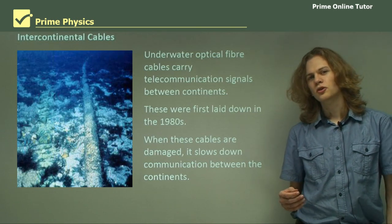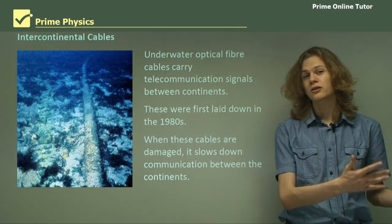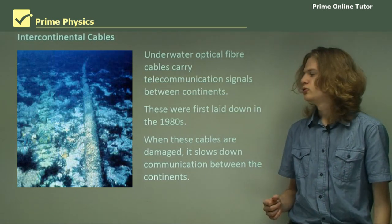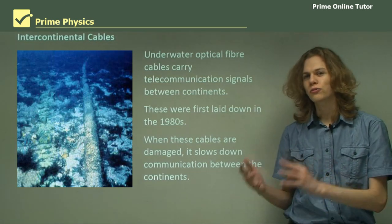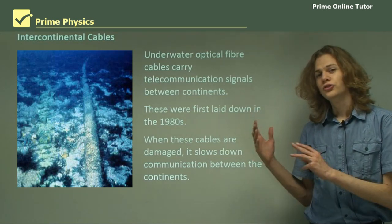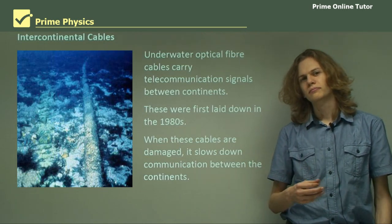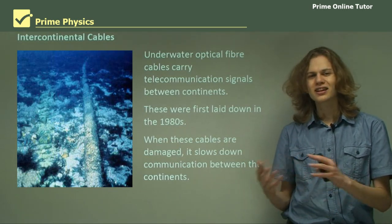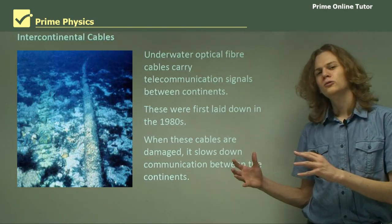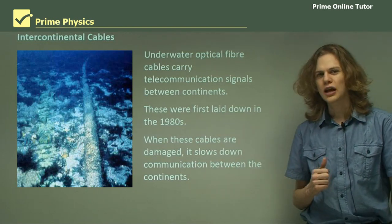This means that it's possible to get internet moving very, very slowly in entire countries if that country is connected to the rest of the world by a single optical fiber. There are of course satellites which will reflect or transmit internet signals around, but they cannot transmit a huge volume of information like these optical fiber cables can.